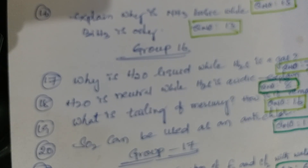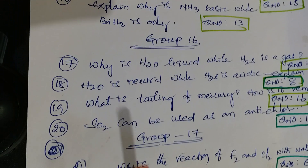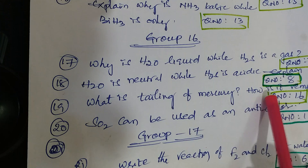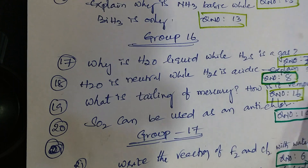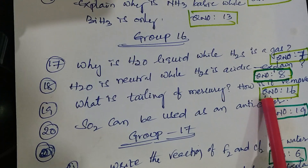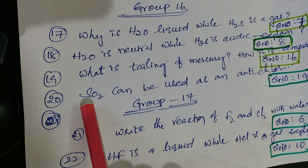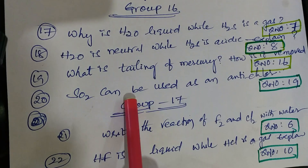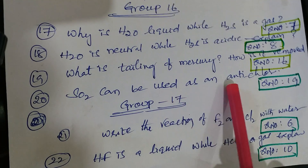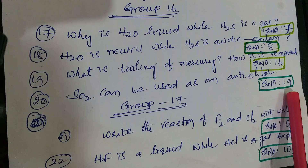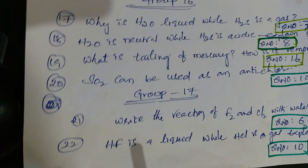Next question: what is tailing of mercury and how is it removed - that is question number 16 from material and Telugu academy. Next one: SO₂ can be used as anti-chlor - that is question number 19. These are the 16th group elements VSAQs.